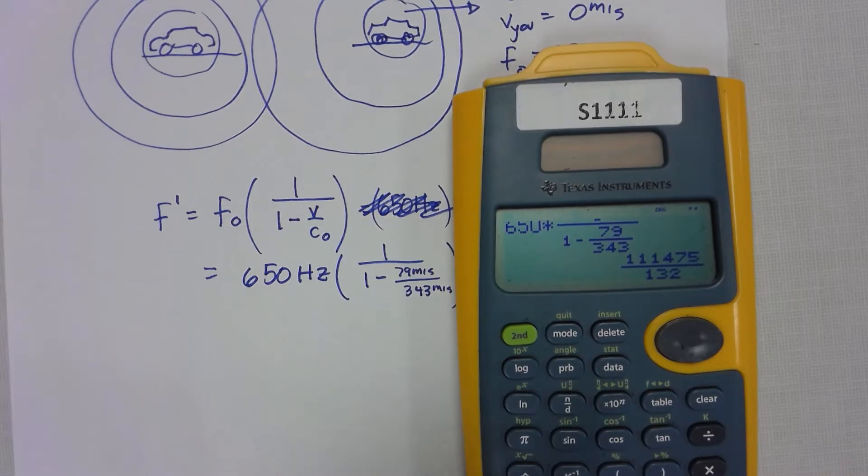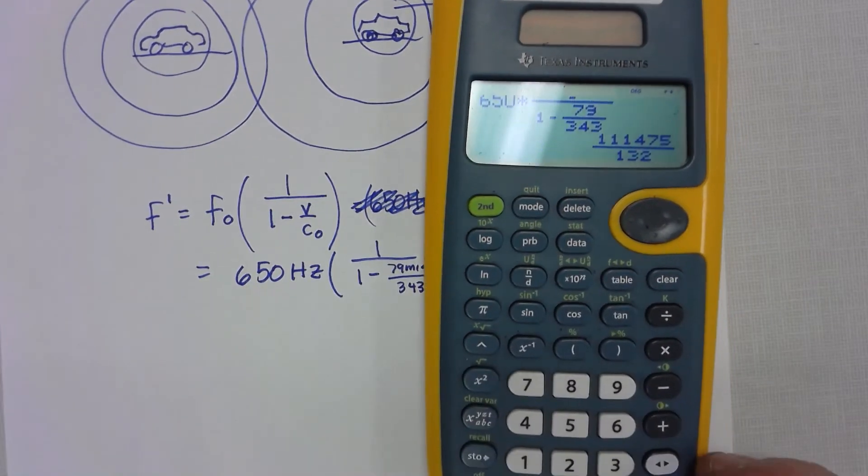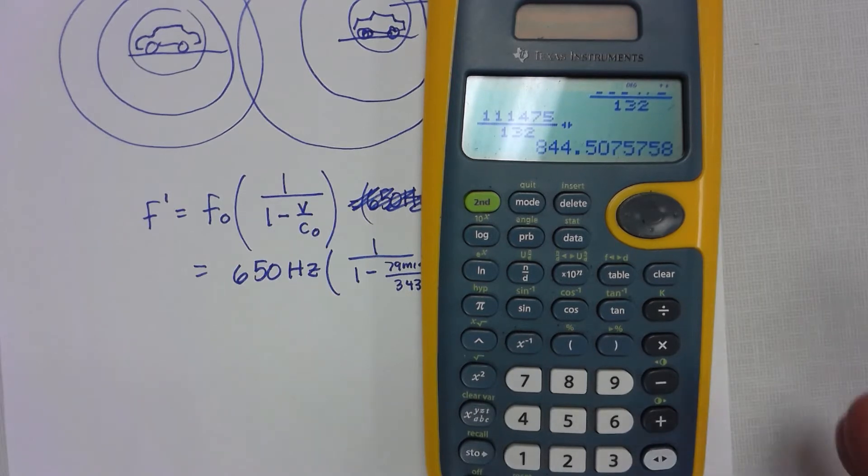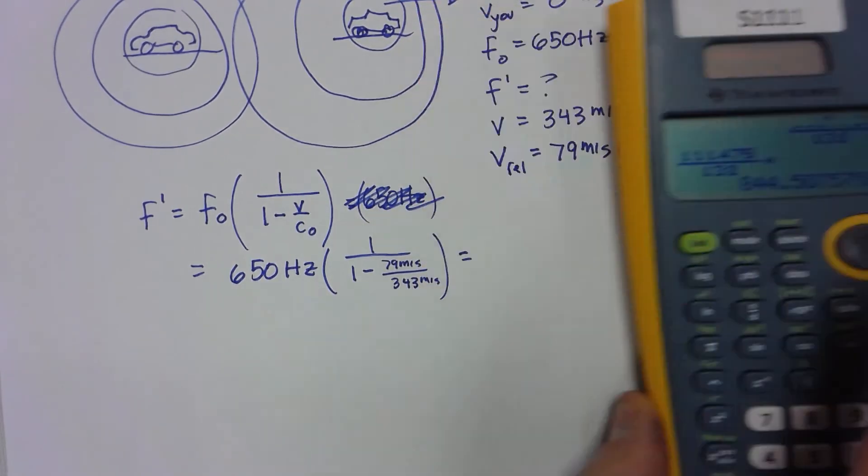When I hit enter I get a perfect fraction, which is interesting. I can just display this as a decimal instead by hitting the button over here on the side, and when I do that I get 844.5 meters per second.